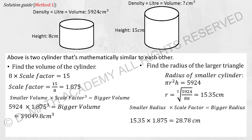Moving on to the next question: we have a cylinder where one has a height of 8 and the other has a height of 15. Note that volume can be referred to as capacity, liters, density, and similar terms — they all mean the same thing. Find the scale factor first: 8 multiplied by something equals 15, so the scale factor is 1.875.